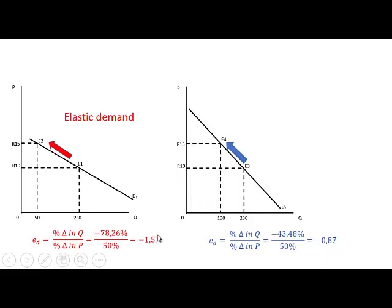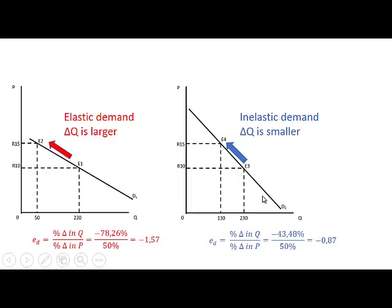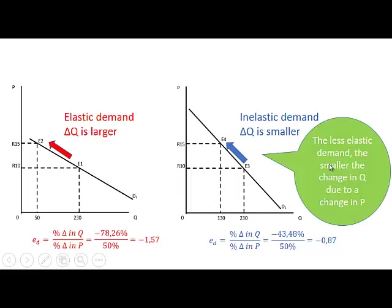We can see that for D1 the absolute value of price elasticity is 1.57, which is larger than 1, so it is elastic demand. While for D2 the absolute value is 0.87, which is smaller than 1, so this is inelastic demand. For elastic demand, the change in quantity due to a change in price is larger. In general, the less elastic the demand, the smaller the change in quantity due to a change in price.